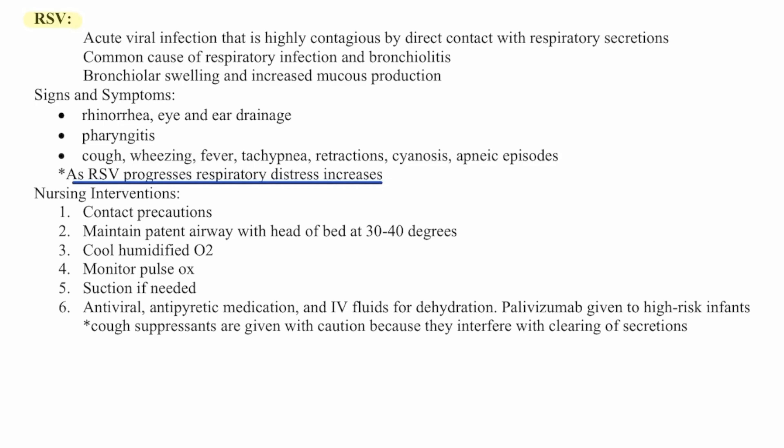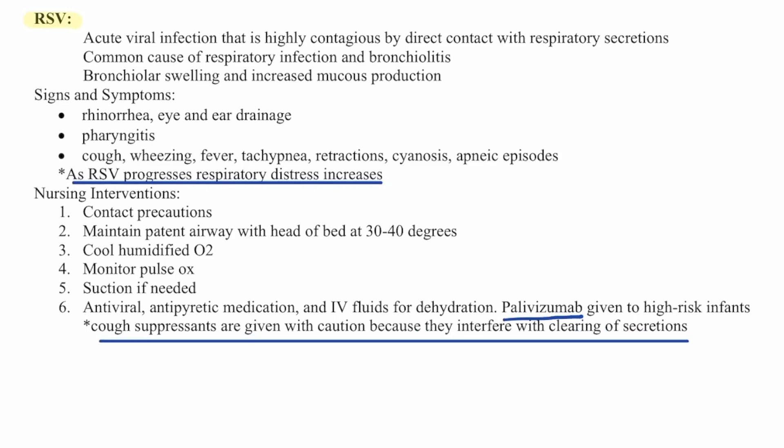Nursing interventions for RSV include contact precautions, maintaining a patent airway with head of bed elevated 30 to 40 degrees, cool humidified oxygen, monitoring pulse ox, suctioning if needed, antiviral and antipyretic medications, and IV fluids for dehydration. We can also give palivizumab for high-risk infants. Cough suppressants are given with caution because they interfere with clearing of secretions.